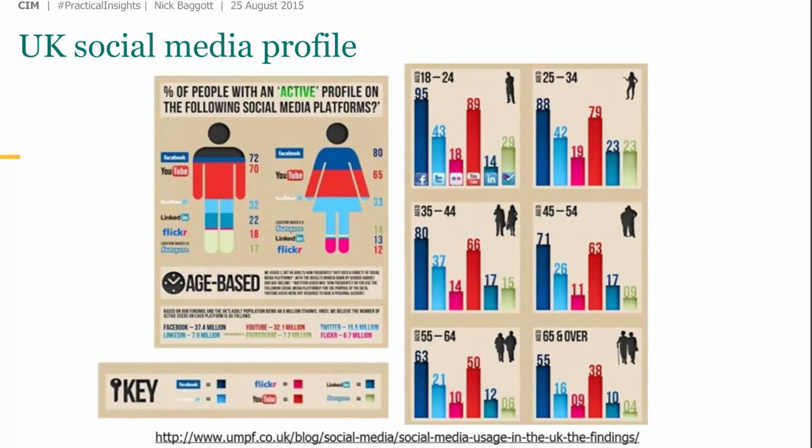Looking at the UK social media profile snapshot: most channels are reaching closer to saturation and getting older. For example, 55% of UK 65-and-overs have a Facebook profile — they may not be actively posting every day but are following family and looking at content. We're also seeing an interesting trend where younger audiences, the 16 to 20-year-olds, are using Facebook less and moving towards Snapchat and Instagram, partly because those are new things and partly because their parents are now on Facebook.